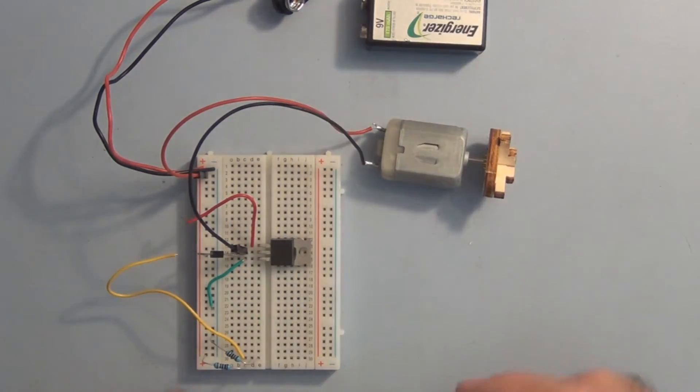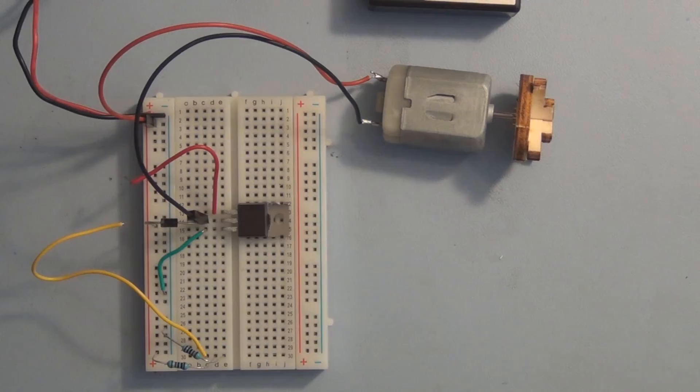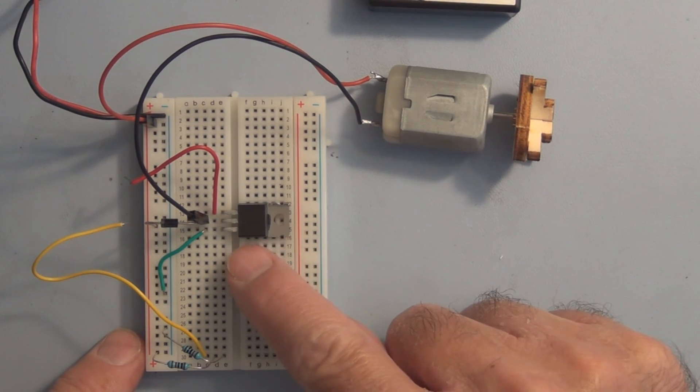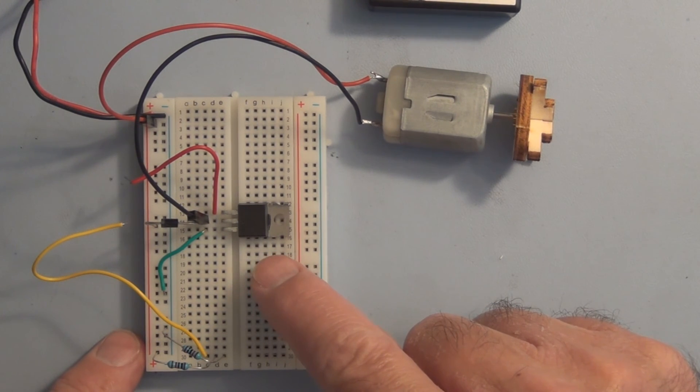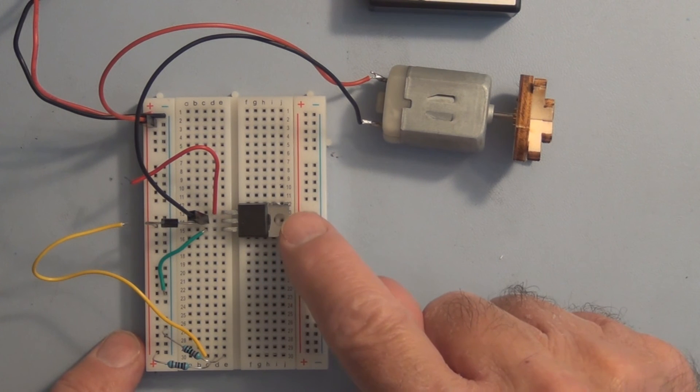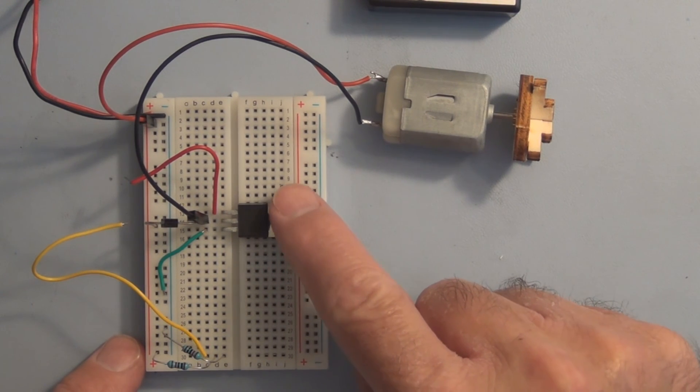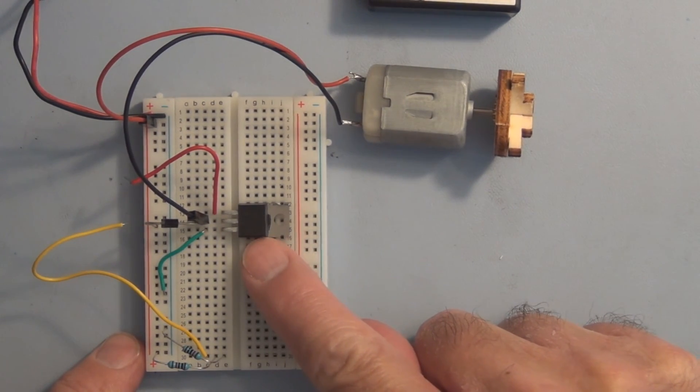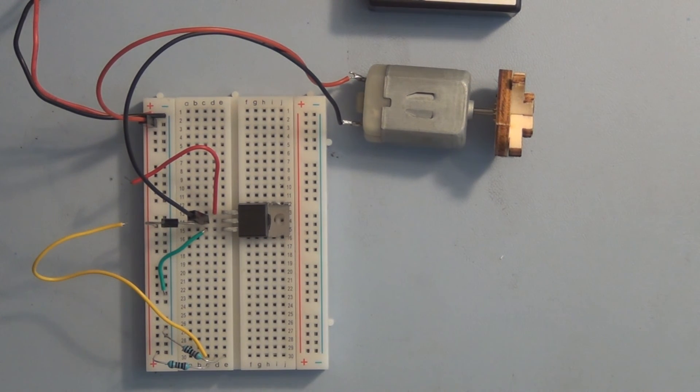So here's the 9 volt battery and I want to show you something interesting. With the N-channel MOSFET the channel is of N material and the gate is P material. If you apply a negative voltage to the gate you will shut down the path from drain to source, the flow of electrons, essentially turning off your motor. If you apply a positive voltage to the gate of this N-channel you will turn this gate on.